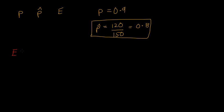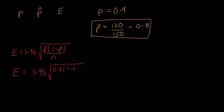So I'm going to say the margin of error, E, is equal to 1.96 multiplied by the square root of P-hat times 1 minus P-hat divided by n. So we saw that formula in the last video. 1.96 times 0.8 times 1 minus 0.8, all divided by 150, which is our sample size.